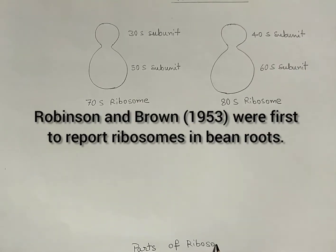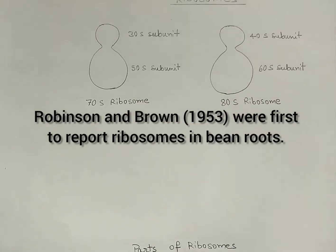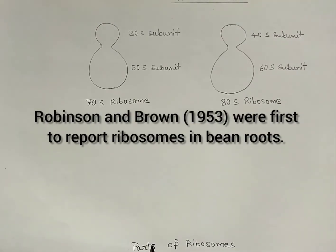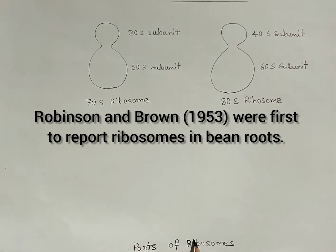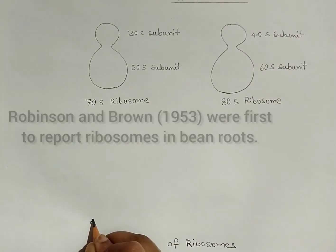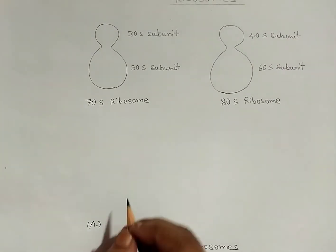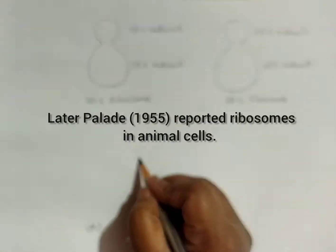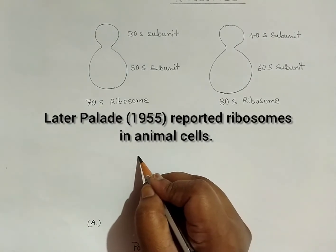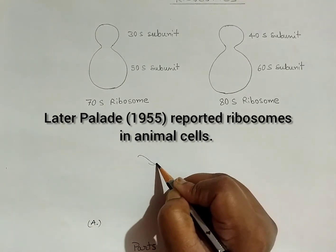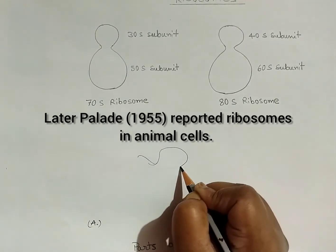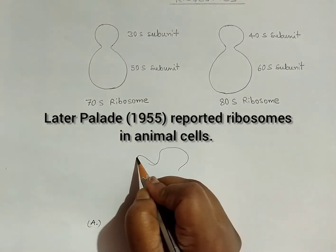Robinson and Brown in 1953 were the first to report ribosomes in bean roots. Pladen in 1955 reported ribosomes in animal cells.